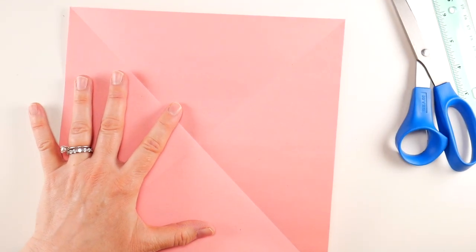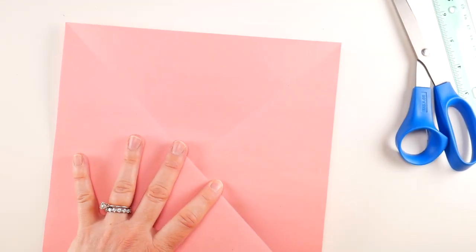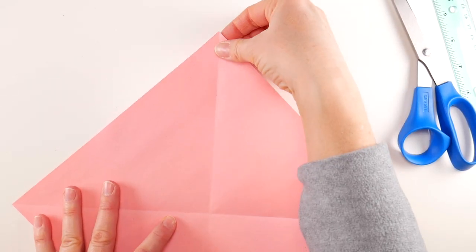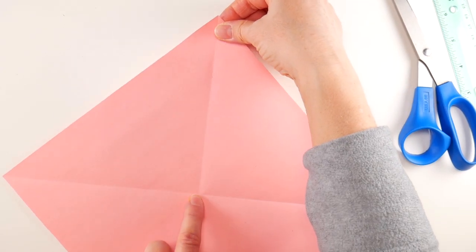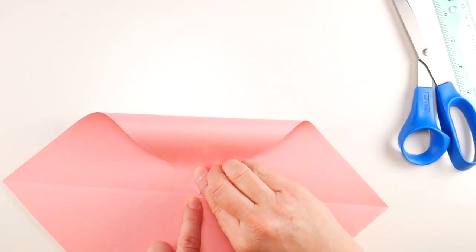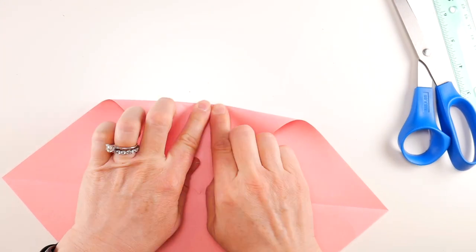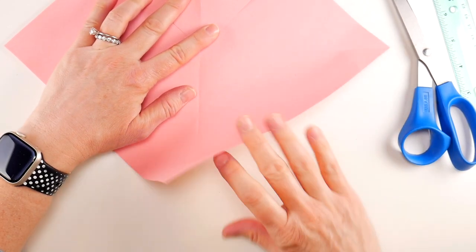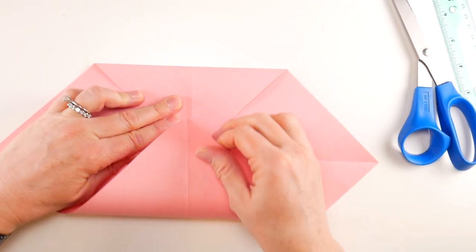Next, we're going to turn it so it's kind of a diamond shape. We're going to take this top point and bring it to the center just like this. Get your crease nice and sharp. Then we're going to take this bottom point here and fold it up to the very top.